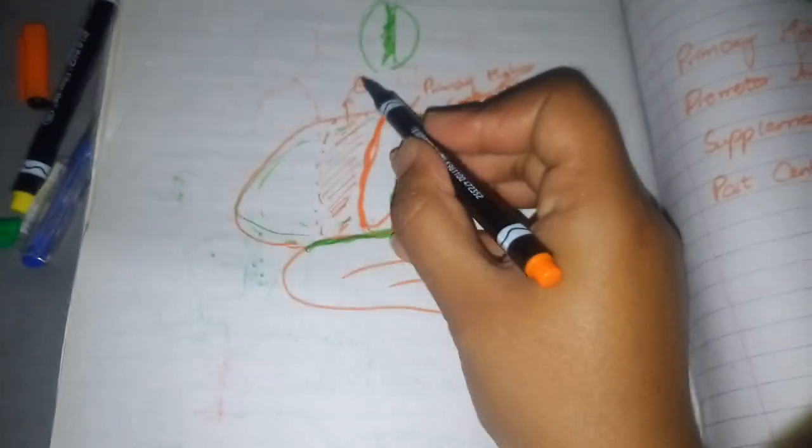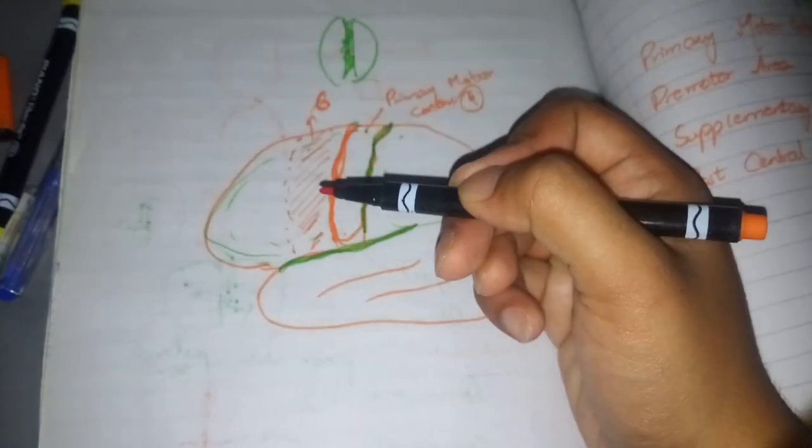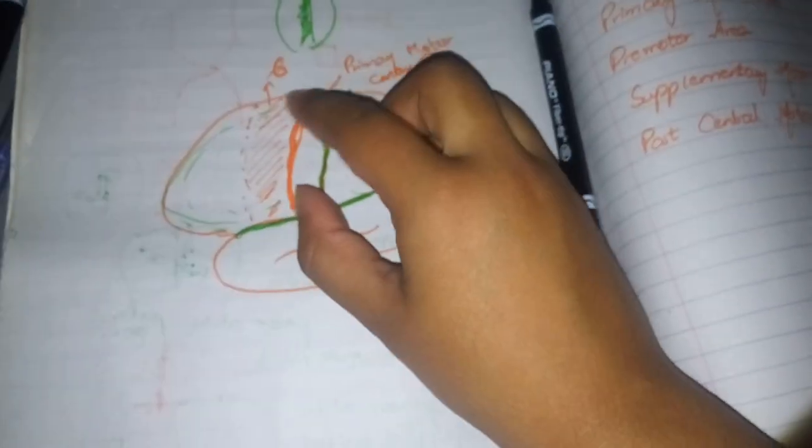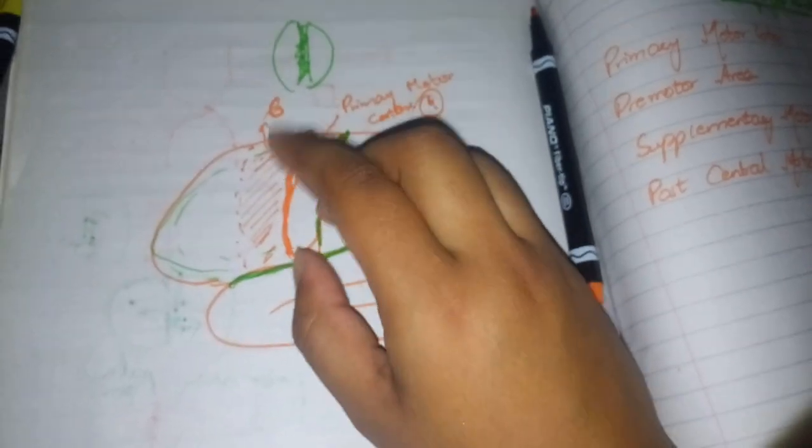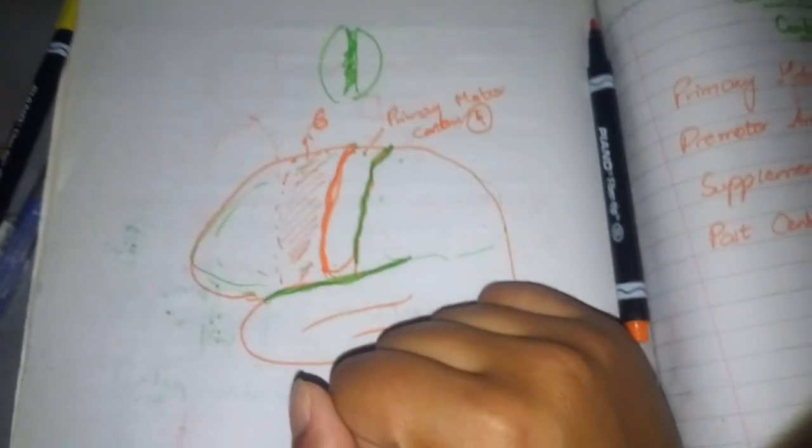This is area 6 on the lateral side. Then we have one area called supplementary motor area. Where the pre-motor area finishes on the medial side of the brain, just at the inner side of the pre-motor cortex in the upper portion, there is a small supplementary motor area.